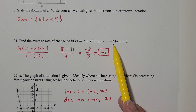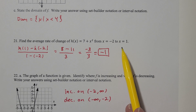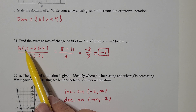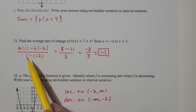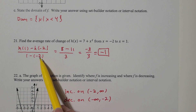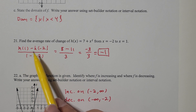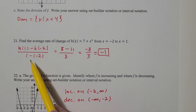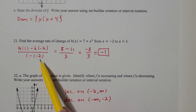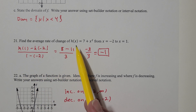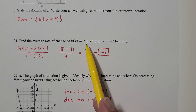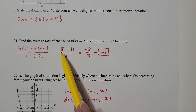So a is -2 and b is 1. That gives us h(b) minus h(a) divided by b minus a, which is h(1) minus h(-2) divided by 1 minus (-2). The bigger number always comes first. So h(1): plugging in 1, I get 7 + 1, which is 8.